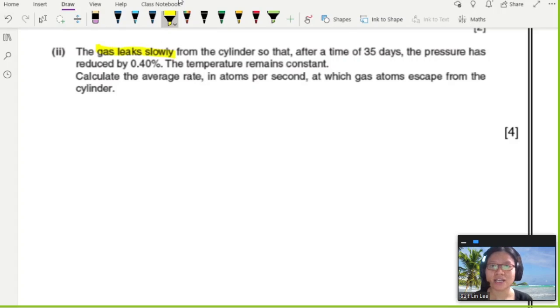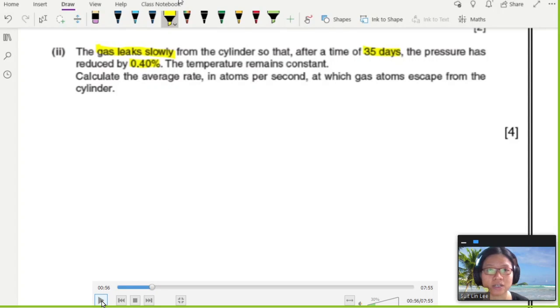Part (ii): The gas leaks slowly from the cylinder, so that after 35 days, the pressure has reduced by 0.4%. Does that make sense? You have a gas cylinder, and maybe some seal or valve is not fully sealed. So there's some escape of gas particles. You have less air particles, less collision with the walls of the container, then you will have less pressure.